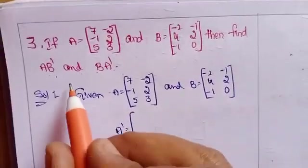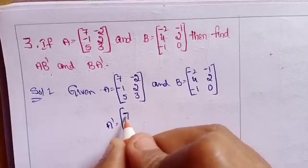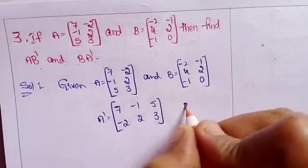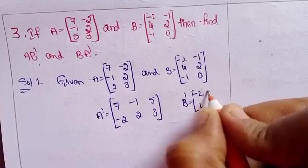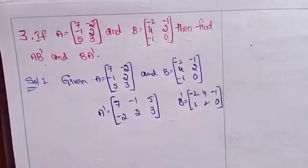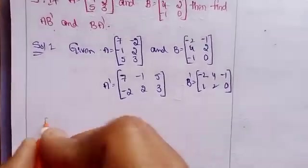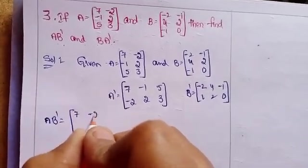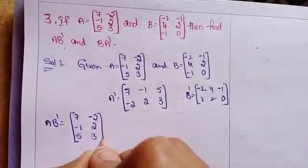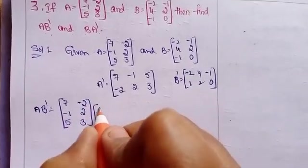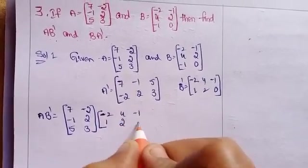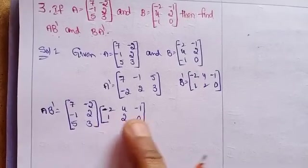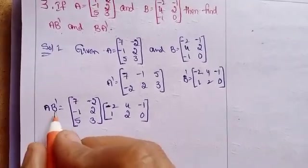B transpose equals minus 2, 4, minus 1, 1, 2, 0. Now compute A into B transpose: A is 7, minus 2, minus 1, 2, 5, 3 (3×2 matrix), into B transpose which is minus 2, 4, minus 1, 1, 2, 0 (2×3 matrix). Number of columns equals number of rows, so the product exists and the result matrix order is 3×3.